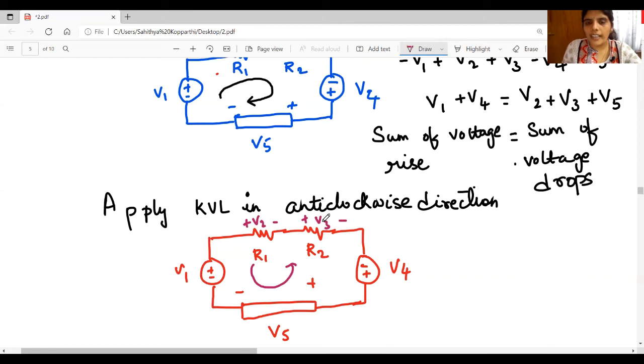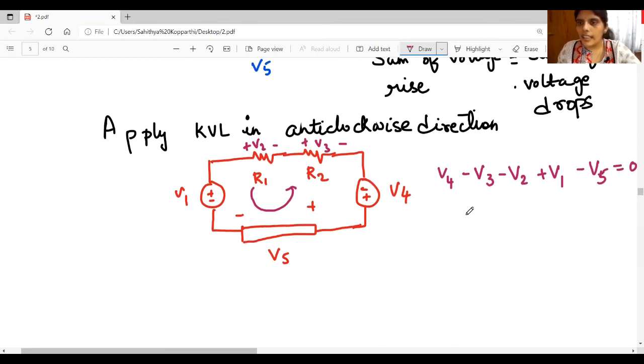Okay, I am starting with V4. So, it is encountering V4 first plus V4 minus V3 because when you are going in anticlockwise direction, it is in minus. Minus V3 minus V2 plus V1 minus V5 is equal to zero. That is, again, you can write it as V1 plus V4 is equal to V2 plus V3 plus V5.